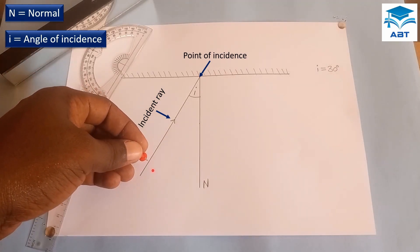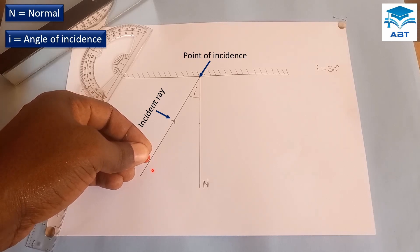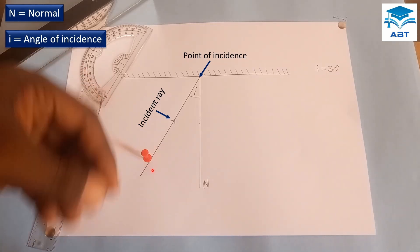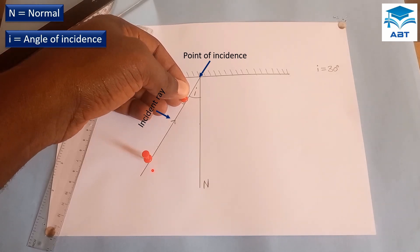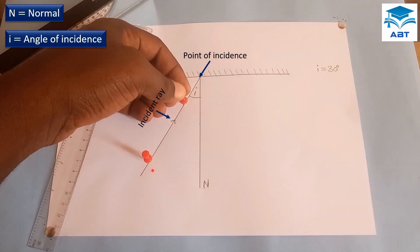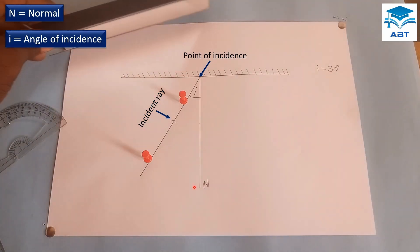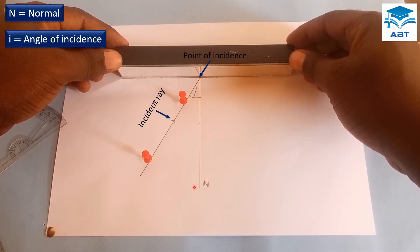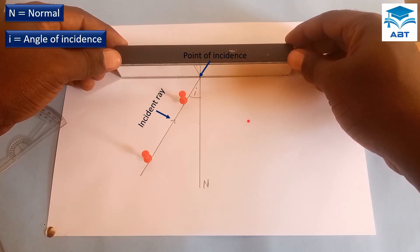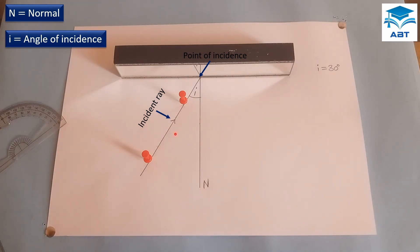Now let's put two optical pins on the incident ray. And then put the mirror on the horizontal line. We are going to look through the mirror from this side and make sure the images of these two pins are in a straight line. Then we put two other pins in that line, so we are going to place two other pins to be in a straight line with the two pins reflected in the mirror.